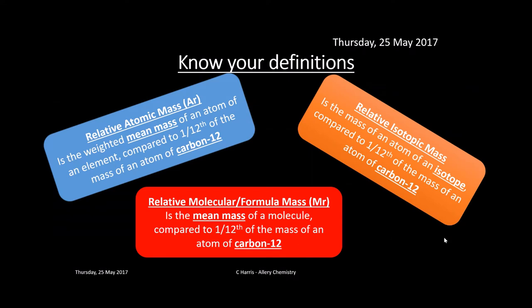Make sure you know your definitions. Relative atomic mass (Ar) is the weighted mean mass of an atom of an element compared to one twelfth of the mass of an atom of carbon-12. Relative isotopic mass is the mass of an atom of an isotope compared to one twelfth of the mass of an atom of carbon-12. Relative molecular mass (or formula mass, Mr) is the mean mass of a molecule compared to one twelfth of the mass of an atom of carbon-12 — so it's a molecule rather than an atom. Know the symbols Ar and Mr as they may be used interchangeably.